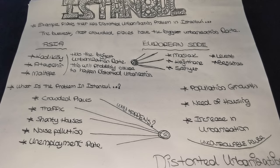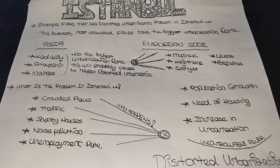For example, as the population increases, the need for housing increases, automobiles increase, and noise, traffic, and air pollution occur. If this is not controlled, it develops in a distorted way — this is the connection between these two situations. For all these reasons, the inability to prevent distorted development is at the top of Istanbul's biggest problems. If distorted development can be prevented, no problem will be completely eliminated, but we will achieve a planned and most importantly sustainable life.